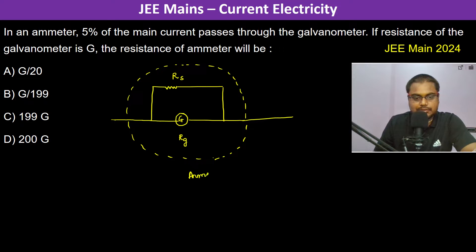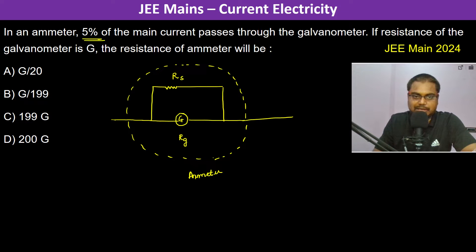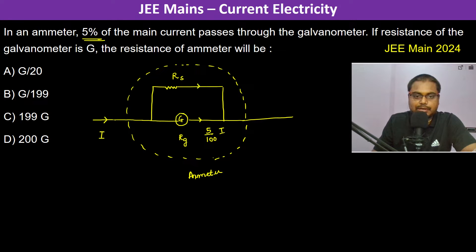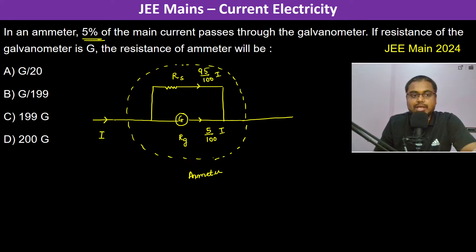In this ammeter, 5% of the main current passes through the galvanometer. So if the total current is I, the current through the galvanometer is 5/100 × I, and therefore the current passing through the shunt resistance is 95/100 × I.